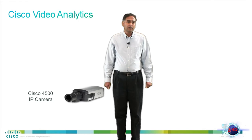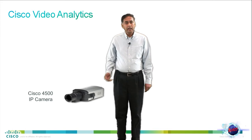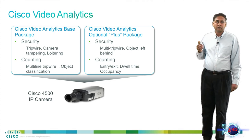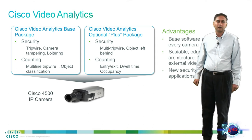Now we'll talk about Cisco video analytics. Cisco offers edge-based video analytics on the 4500E high definition box camera. The camera hosts the analytics engine and generates events according to configured rules. The camera ships with a basic analytics package — you can either turn on security behaviors such as tripwire or loitering, or counting behavior, allowing you to count people or objects. In addition, you can buy licenses to upgrade these packages in the field.